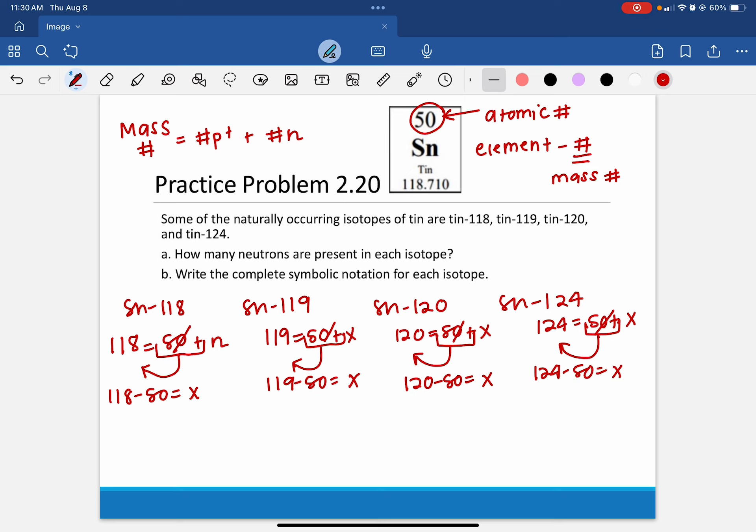And then 124 minus 50 equals X. And whenever you do the subtraction, it ends up being X equals 68, X equals 69, X equals 70, and X equals 74. So the total number of neutrons are 68, 69, 70, and 74. So that's letter A for all of them.